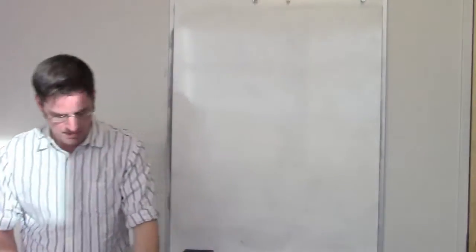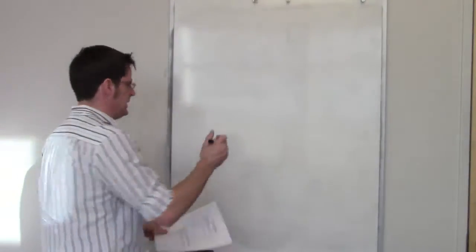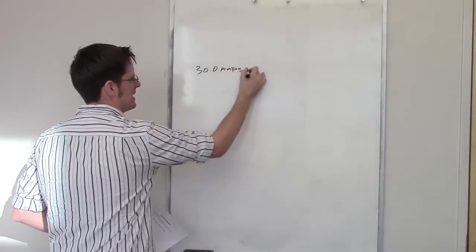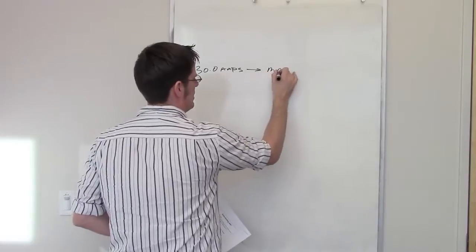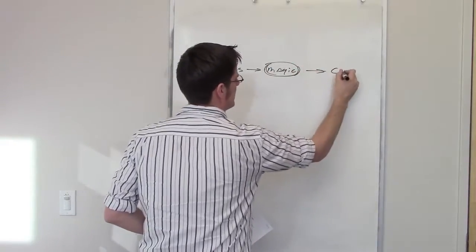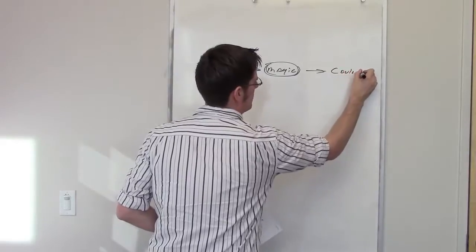So let's go to the board here. Once again, it tells me that I've got 30 amps, so I need to somehow change that into Coulombs. So I'm going to write down magic, and then we go through the magic box and then we come out with some number of Coulombs.